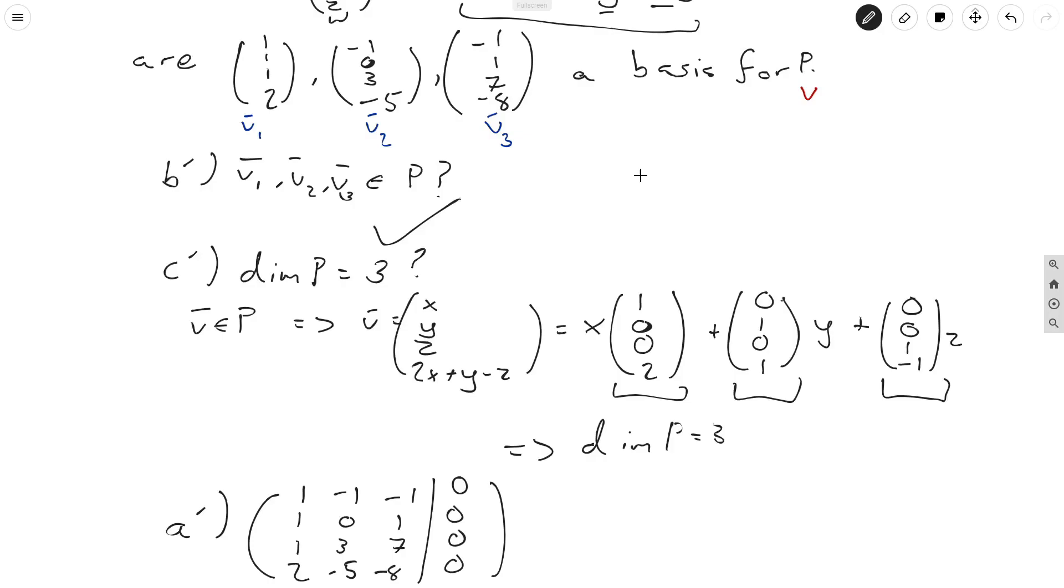So, since dimension of P is equal to three, it is indeed true that the condition c prime is indeed true. And similarly, last time we just need to check that these three vectors are linearly independent.